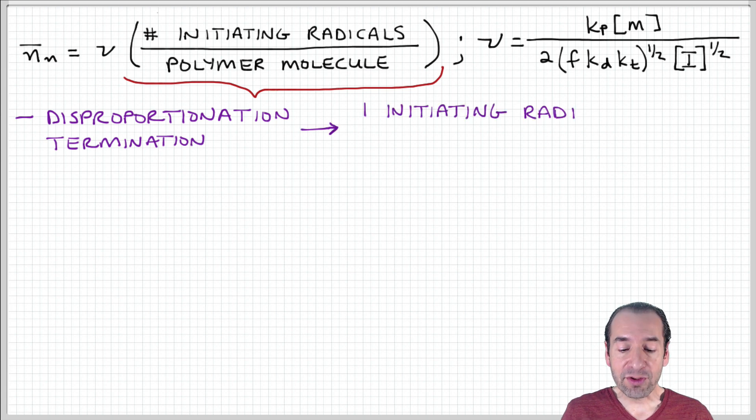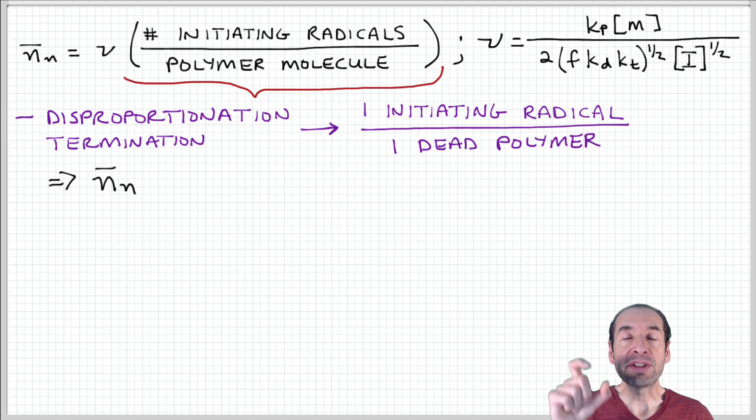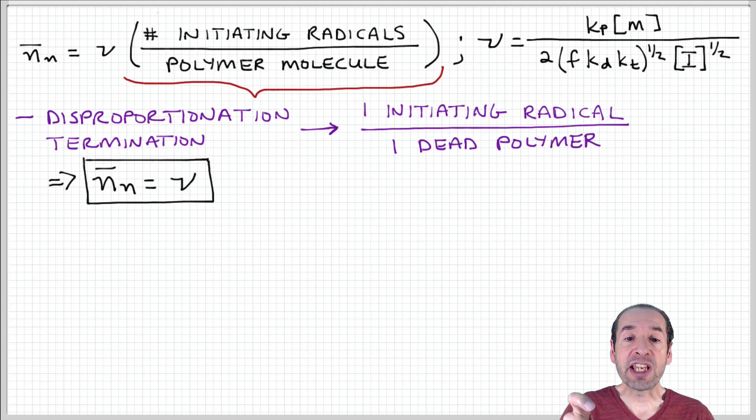each initiating radical leads to one dead polymer because every growing chain is terminated to produce a dead chain. So in that case, this ratio is one. So our degree of polymerization for disproportionation termination is equal to this parameter ν.